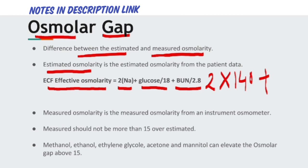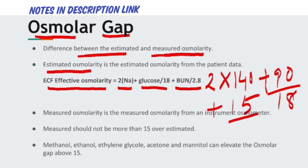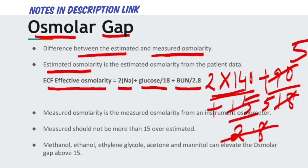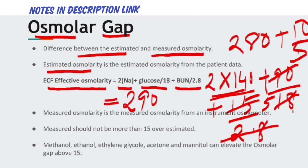To calculate the normal ECF osmolarity: 2 × 140 = 280, plus glucose (normal ~90) divided by 18 = 5, plus BUN (normal ~15) divided by 2.8 ≈ 5. So 280 + 5 + 5 = 290. The normal extracellular fluid osmolarity is approximately 290 milliosmoles per liter.